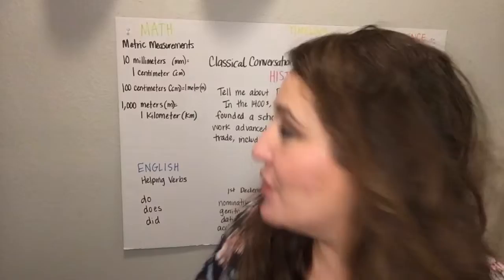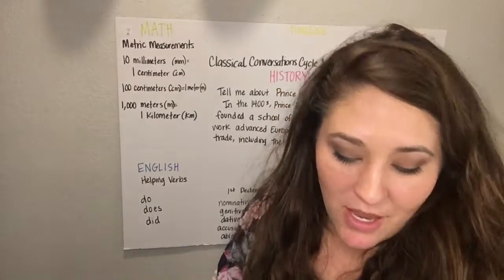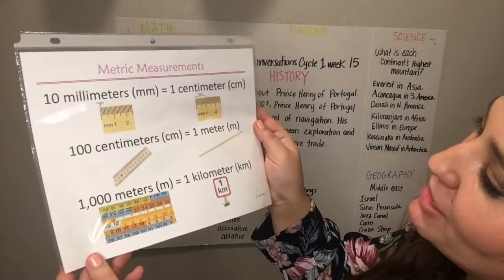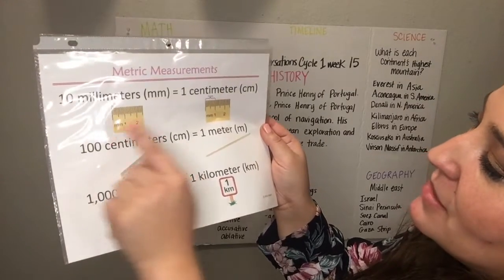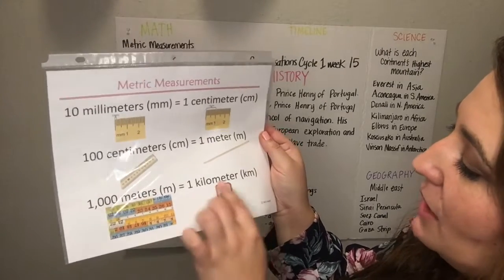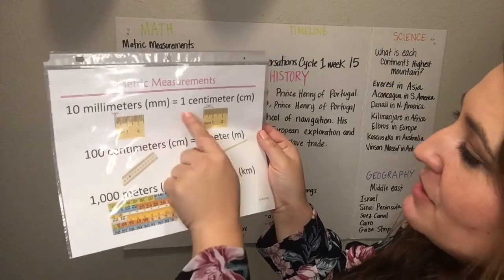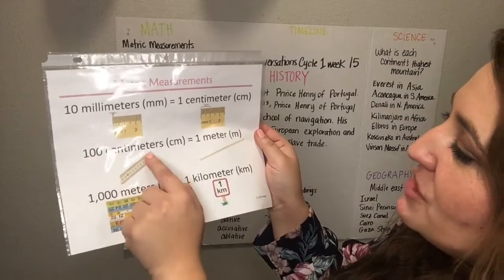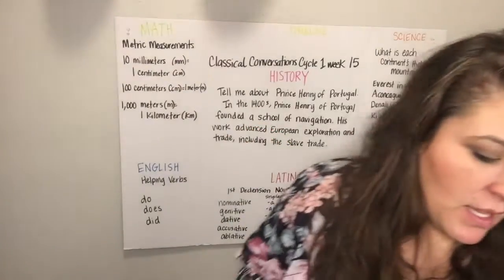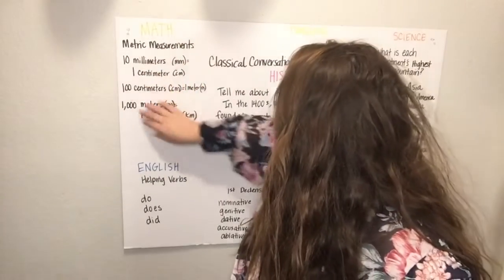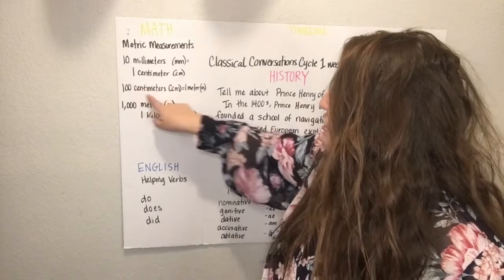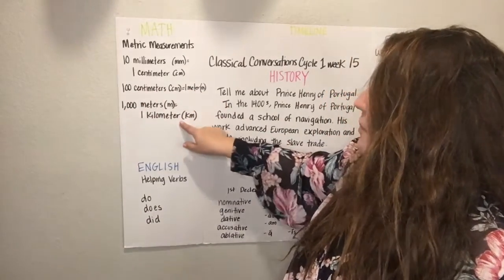We're going to move on to our metric measurements — we're going to do some math. We have millimeters, centimeters, meters, and kilometers. So: 10 millimeters equals 1 centimeter, 100 centimeters equals 1 meter, 1,000 meters equals 1 kilometer.